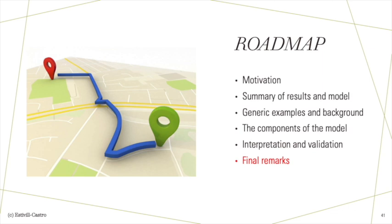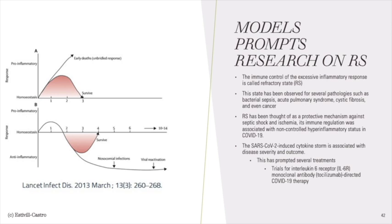There are some aspects of the model we could not elaborate further because these aspects remain unknown to immunologists. The immune control of the excessive inflammatory response is called the refractory state (RS). This state has been observed for several pathologies such as bacterial sepsis, acute pulmonary syndrome, cystic fibrosis, and even cancer. RS has been thought of as a protective mechanism against septic shock and ischemia. Its immune regulation was associated with non-controlled hyperinflammatory status in COVID-19. The COVID-19-induced cytokine storm is associated with disease severity and outcome, prompting several treatment trials for interleukin-6 receptor (IL-6R) monoclonal antibody tocilizumab-directed COVID-19 therapy. With more understanding of RS, the model could be refined further.